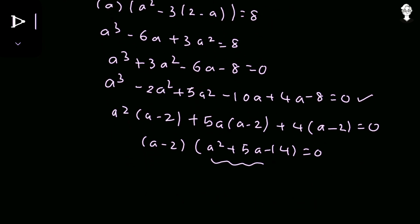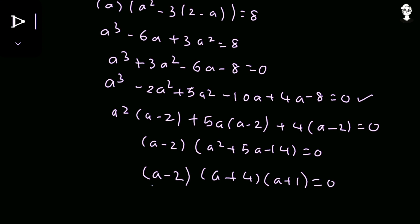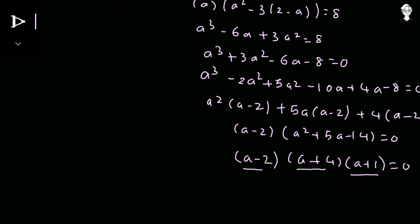Taking (a − 2) as a common factor gives (a − 2)(a² + 5a + 4) = 0. The quadratic a² + 5a + 4 factors as (a + 4)(a + 1). So the full factorization is (a − 2)(a + 4)(a + 1) = 0, giving three values of a: a = 2, a = −4, or a = −1.